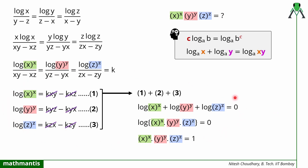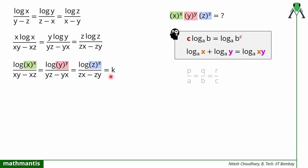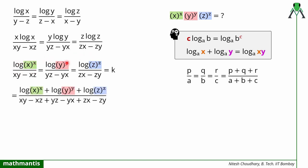Instead of this long calculation, we can also solve directly using the properties of ratio and proportion. The property states: if P/A equals Q/B equals R/C, you can always equate this to the addition of numerator terms upon the addition of denominator terms. Applying this here, I can write the common ratio as the sum of the log numerator terms divided by the sum of the denominator terms.